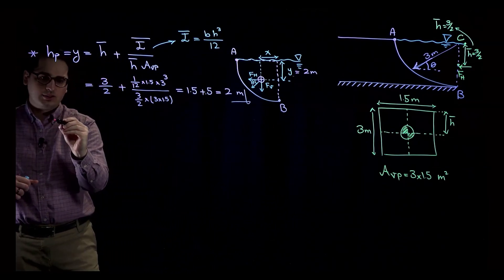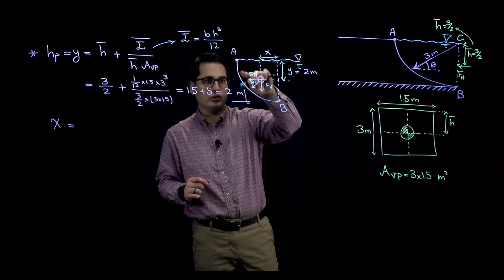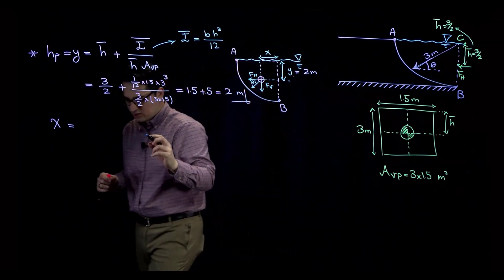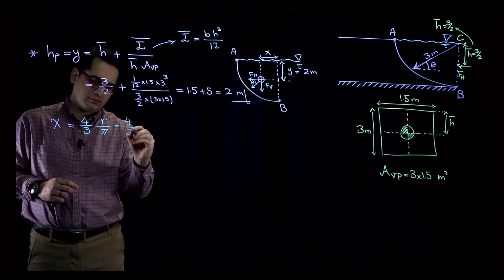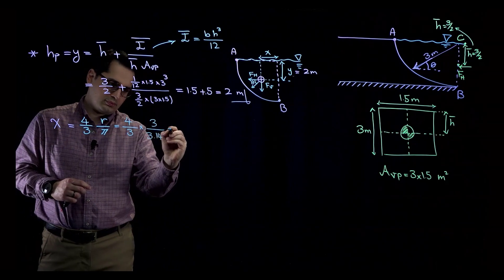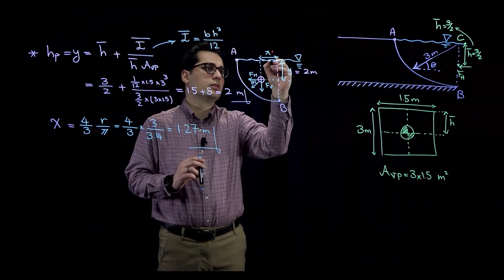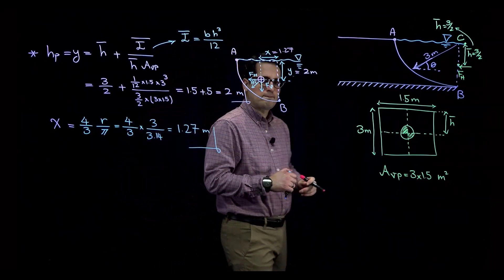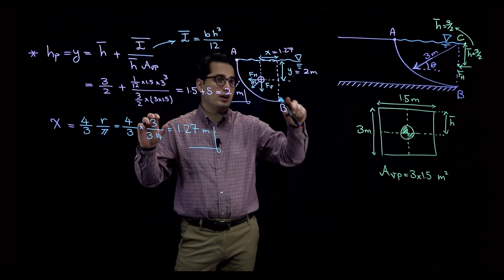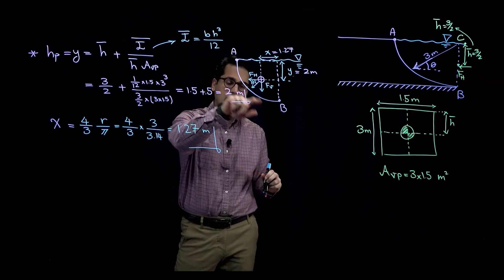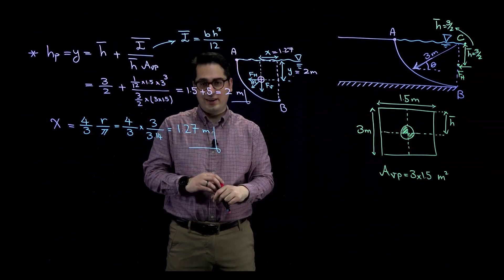To find X, you use the standard table for centroids. For a quarter circle, the value of X is given as 4R divided by 3pi. With radius R = 3 meters, we can calculate the value of X. To recap: we calculated the magnitude of the hydrostatic force on curved surface AB, found theta for the direction, and determined the coordinates Y and X of the center of pressure where the resultant force acts.